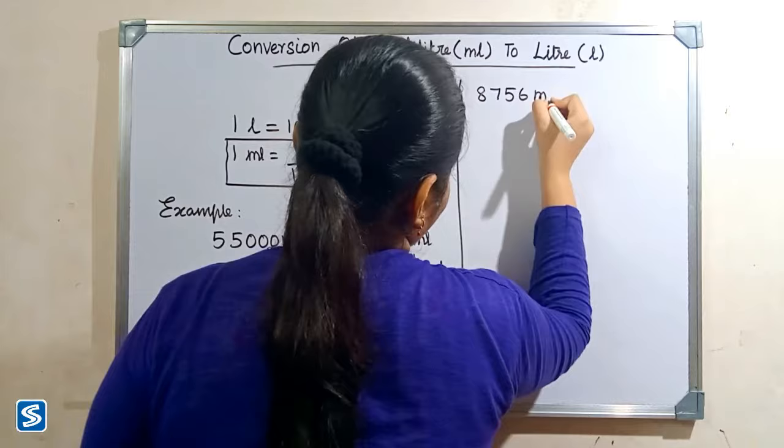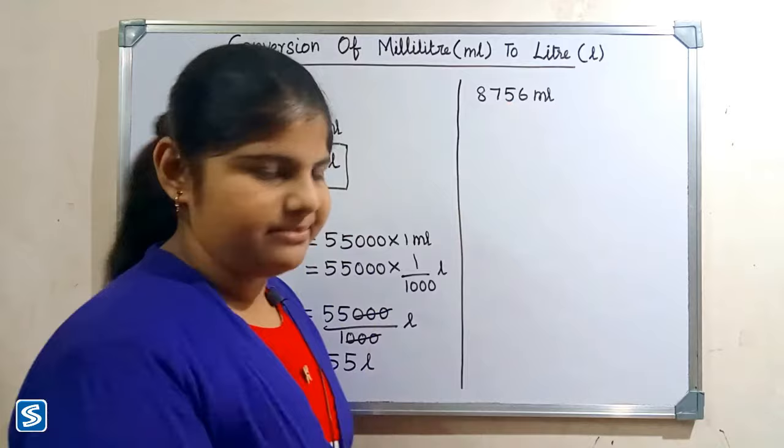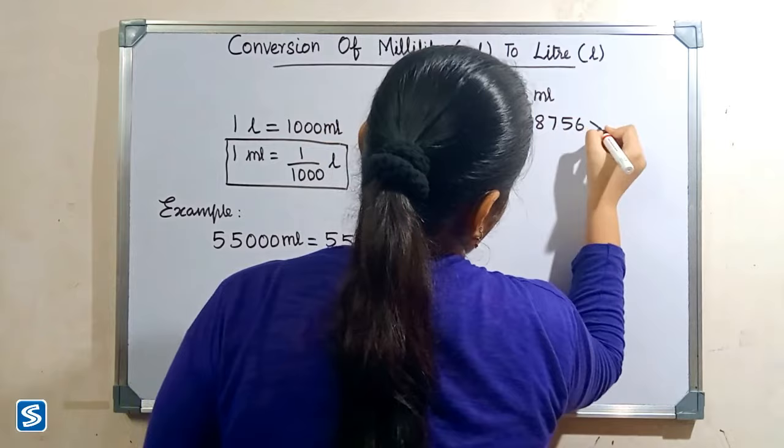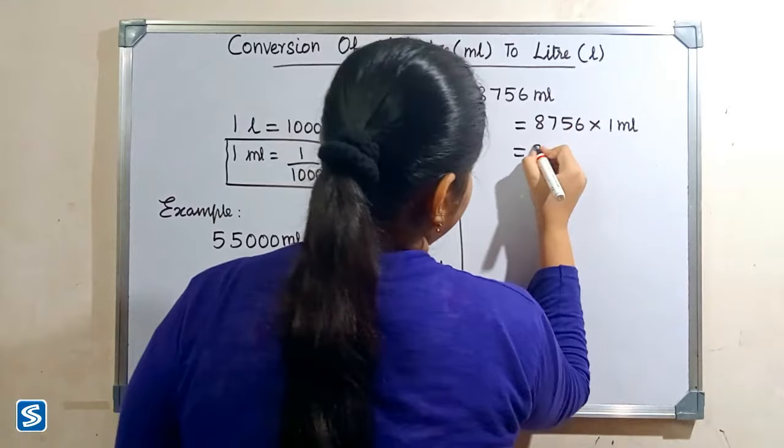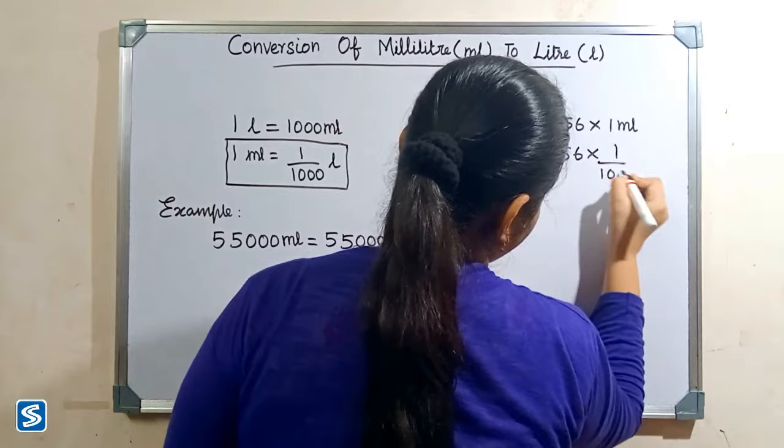Next example: eight thousand seven hundred and fifty-six milliliters. Eight thousand seven hundred and fifty-six milliliters can be written as eight thousand seven hundred and fifty-six multiply one milliliter. Now we have to substitute one by one thousand liters in the place of one milliliter, so eight thousand seven hundred and fifty-six multiply one by one thousand liters.